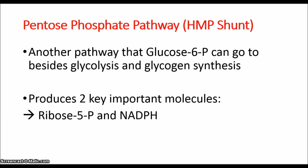The pentose phosphate pathway is just another route glucose 6-phosphate can go to besides glycolysis and glycogen synthesis. This pathway produces two key important molecules: ribose 5-phosphate and NADPH — not NADH, but NADPH. Again, the pentose phosphate pathway produces two important molecules: ribose 5-phosphate and NADPH.